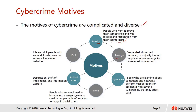Another motive is revenge. Suspended, dismissed, demoted, or unjustly treated people take revenge to cause maximum impact. For example, an employer fires an employee, and some employees who were suspended or demoted become so angry that they want to take revenge on the company. There is also ignorance — people learning about computers and networks who perform misoperations or accidentally discover vulnerabilities that may affect data.